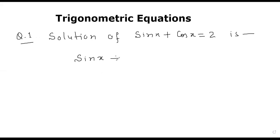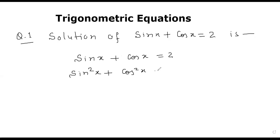Squaring both sides: sin²x + cos²x + 2 sin x cos x equals 4.